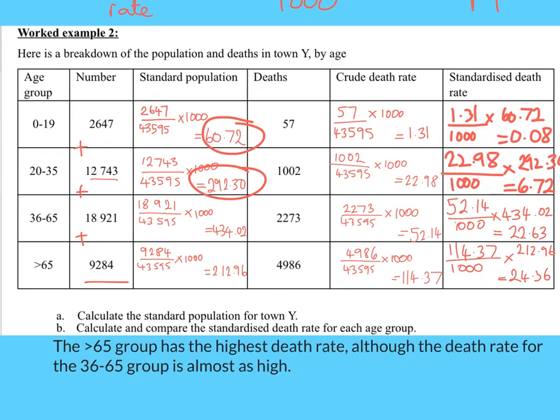It's worth noting that standardised rates can also be used to compare other factors like gender, marital status, or levels of income. We're going to look at one more brief worked example — commenting on a graph — and then you'll do some practice questions yourself.